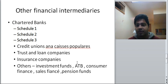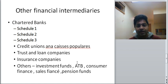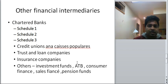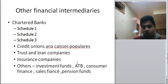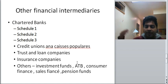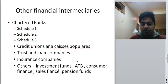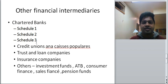Other financial intermediaries besides investment dealers include chartered banks. Banks work on deposits and credit — you deposit money and the bank gives out loans to someone else. The difference between what the bank pays depositors and what it charges borrowers is its income. In Canada, chartered banks are divided into different schedules: schedule one, schedule two, and schedule three.